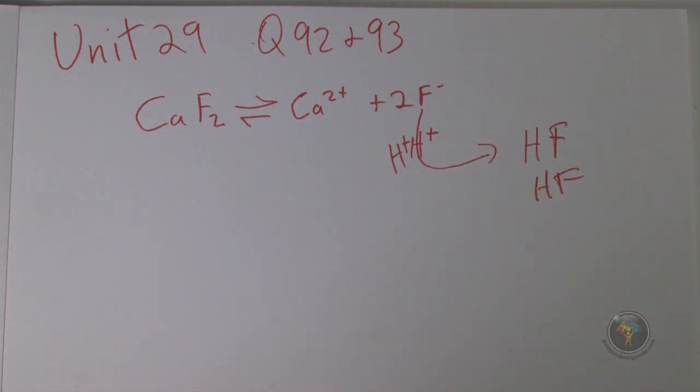Question 93: A solution of NaF is added to a solution containing equimolar concentrations of BaF2, SrF2, and MgF2. Given the solubility products, what would be the order of precipitation?